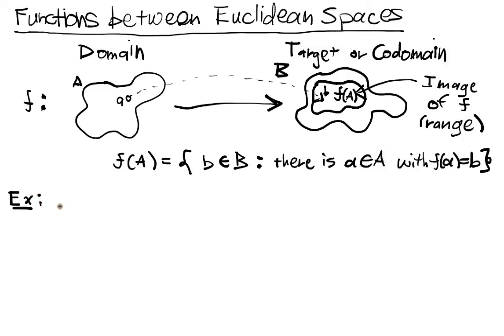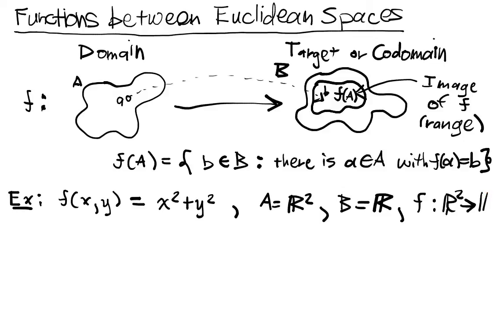So the first example we have is F of X, Y. So we can plug in two numbers to F. It's going to be X squared plus Y squared. And what's our domain and our codomain here? Well, A is going to be equal to R squared. And B is equal to R. And so F is a map from R squared into R.